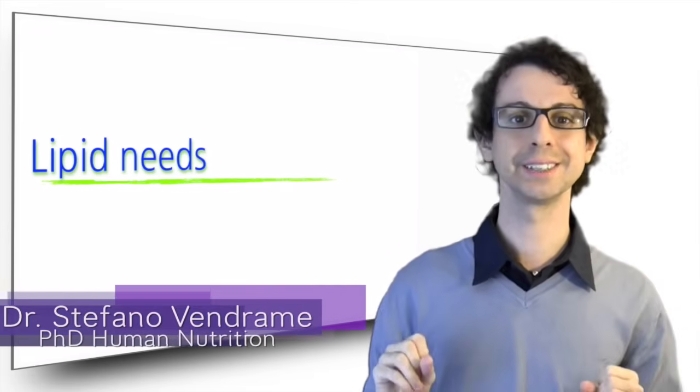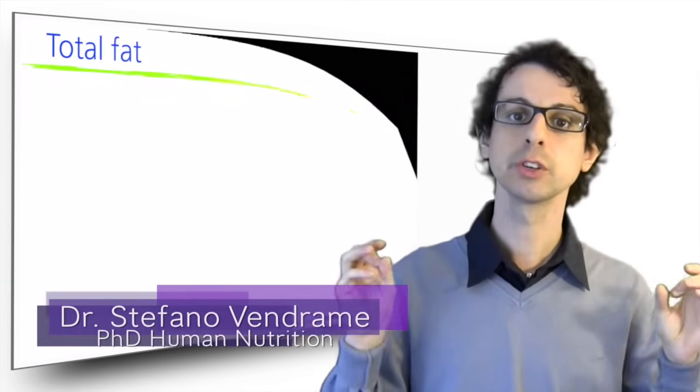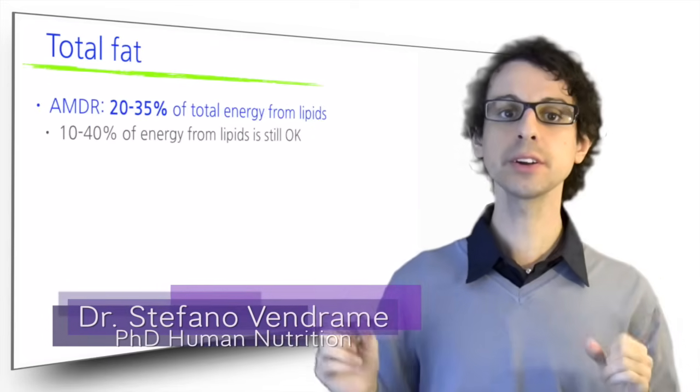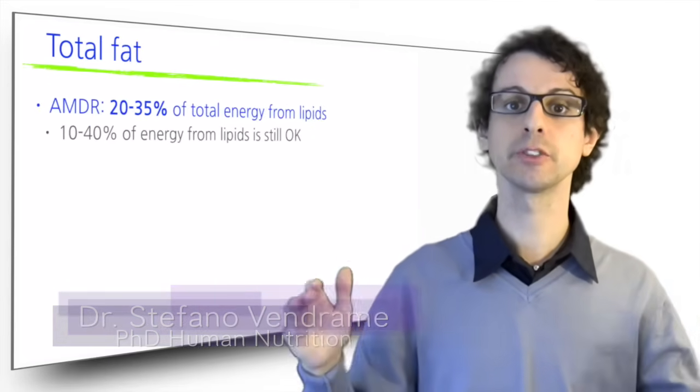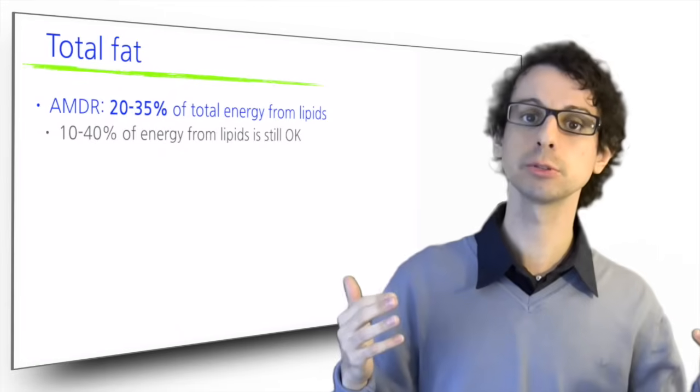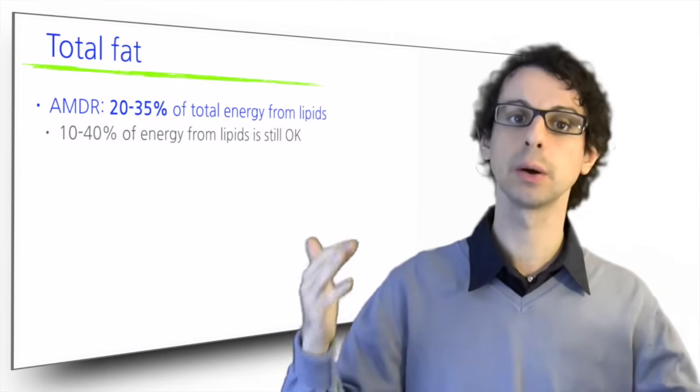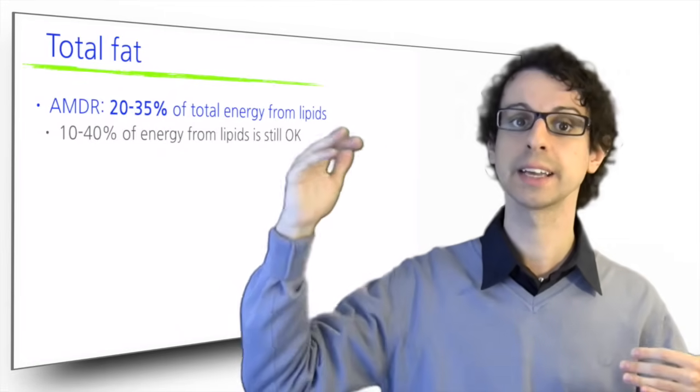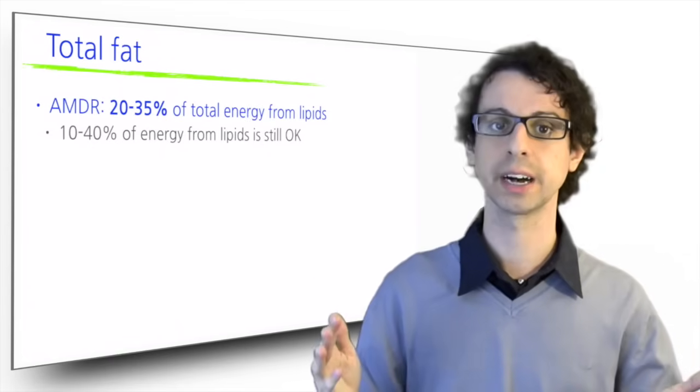How much fat do we need? The DRIs say we should eat somewhere between 20 and 35% of our total energy from fat, although most nutritionists agree that you can safely go as low as 10% and as high as 40% and you're still fine.